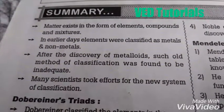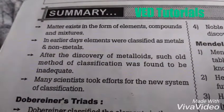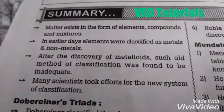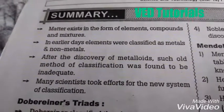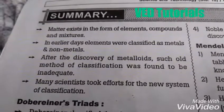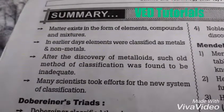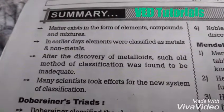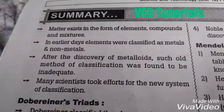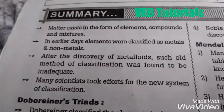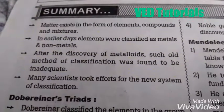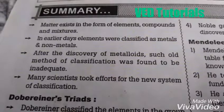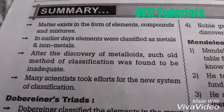So students, see the summary. Matter exists in the form of elements, compounds, and mixtures. In earlier days, elements were classified as metals and non-metals. After the discovery of metalloids, such old methods of classification were found to be inadequate.